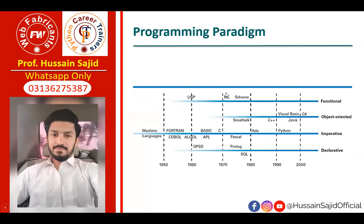In 1960 we had machine language. From a functional point of view, there was Scheme language in the late 1970s to 1980. Then object-oriented: Smalltalk, then C++, then Visual Basic and Java, then C#. Object-oriented also includes Python, which came later.